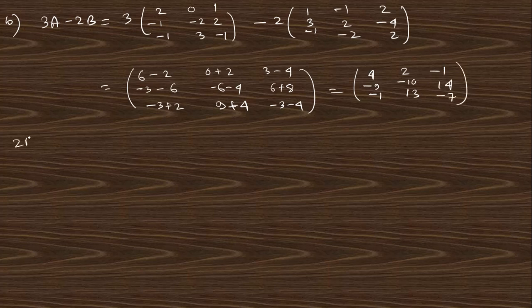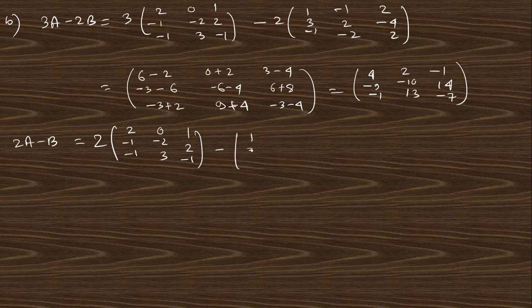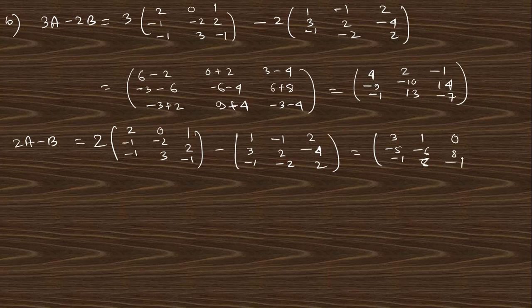Next, 2A - B: 2A is [4, 0, 2; -2, -4, 4; -2, 6, -2] minus B is [1, -1, 2; 3, 2, -4; -1, -2, 2], giving [3, 1, 0; -5, -6, 8; -1, 8, -4].